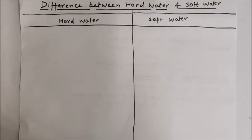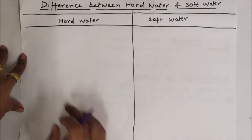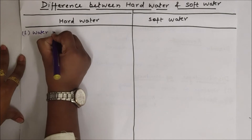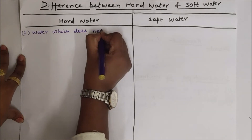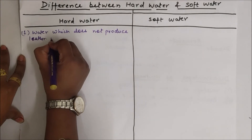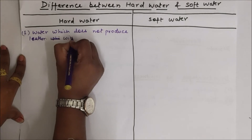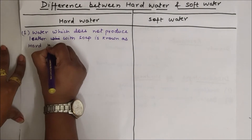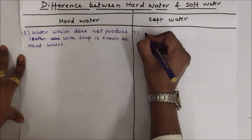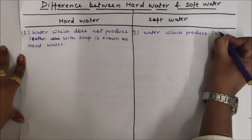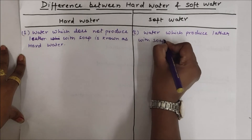Welcome to chemistry class. Today we are going to differentiate between hard water and soft water. The water which does not produce lather with soap is known as hard water, while the water which produces lather with soap is known as soft water.